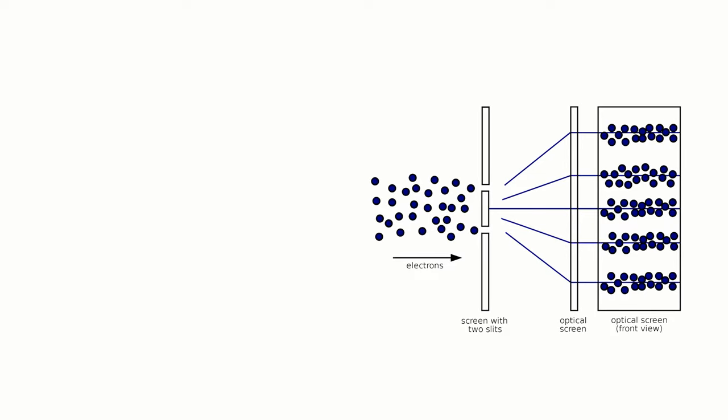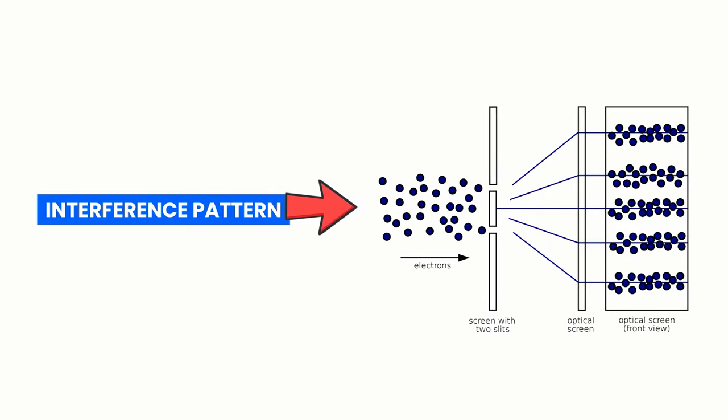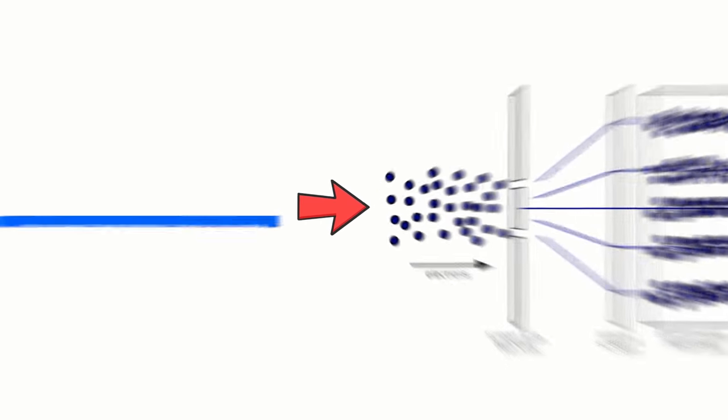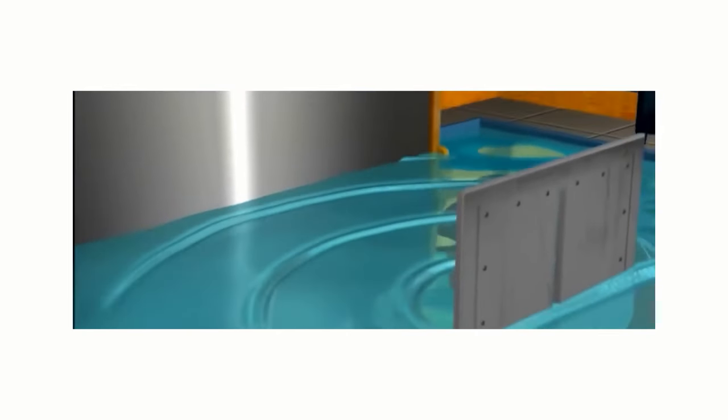When a beam of particles is directed at a barrier with two slits, the particles can form an interference pattern on a screen behind the barrier, similar to the pattern produced by waves. This is because the particles passing through the slits exhibit wave-like behavior, with each particle having a probability amplitude that can interfere with other probability amplitudes. On the other hand, the particle-like behavior of particles is observed in experiments involving measurement and observation. When a particle is measured, it is observed to have a definite position and momentum, and its wave-function collapses to a single state.